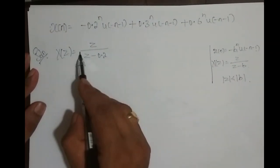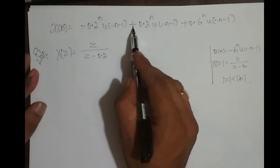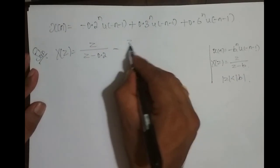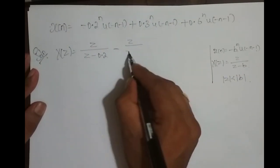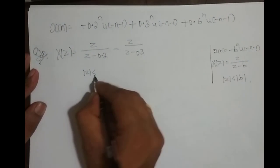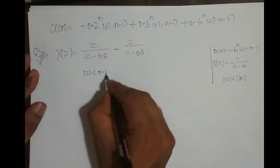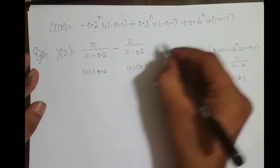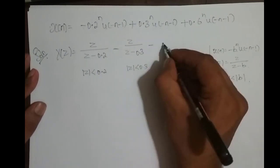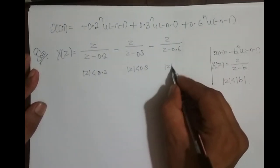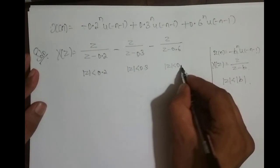Note: if the given term has a minus sign, we put a plus in the formula, and vice versa. For the second term with b = 0.3: Z-transform is −Z/(Z − 0.3), ROC: |Z| < 0.3. For the third term, we have plus so we put minus: −Z/(Z − 0.6), ROC: |Z| < 0.6. The individual ROCs are |Z| < 0.2, |Z| < 0.3, and |Z| < 0.6.